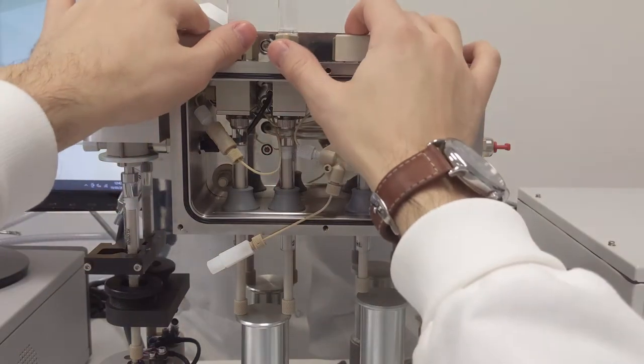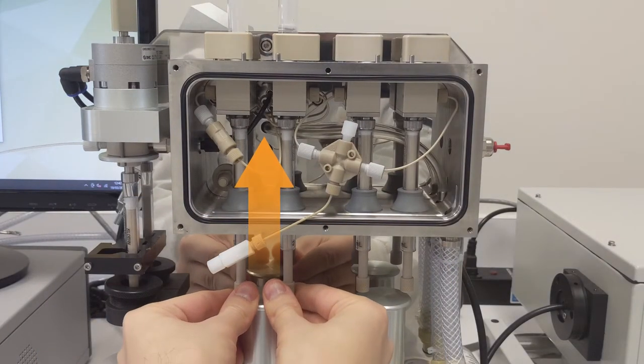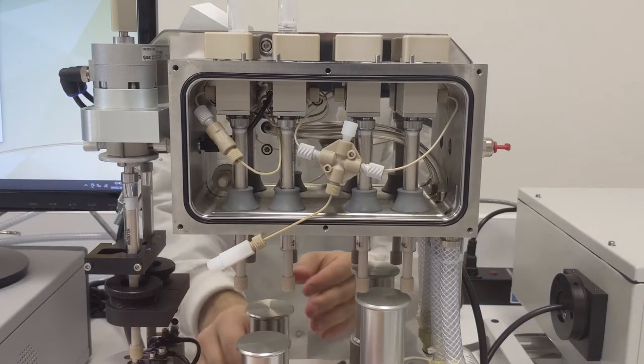Syringe removal is done like this. First, make sure that there is no residual liquid in the drive syringes by pushing them upwards with the drive valves in the load position.